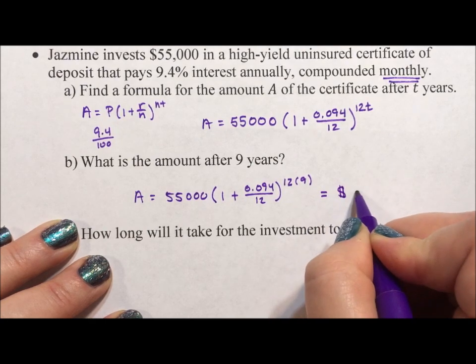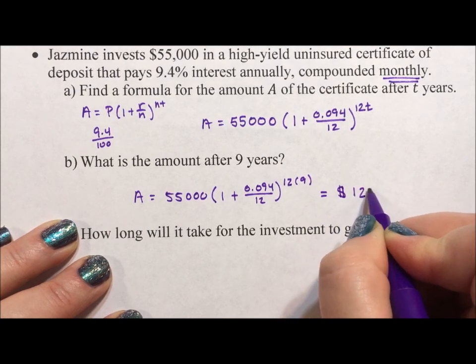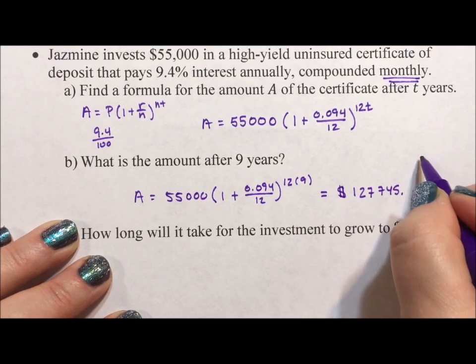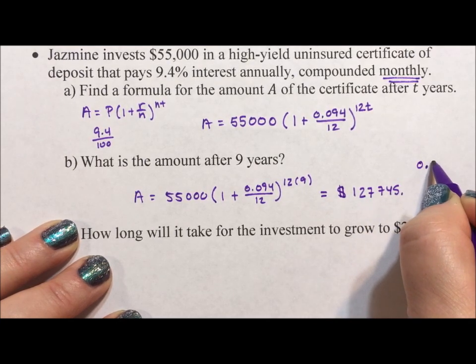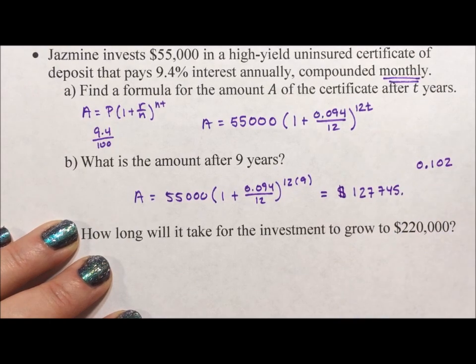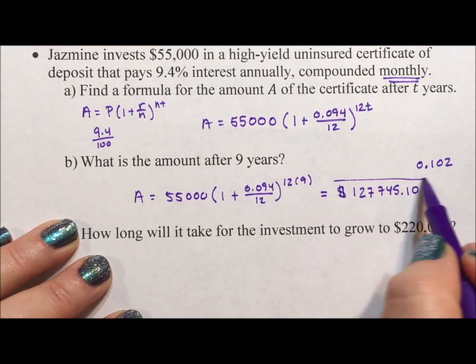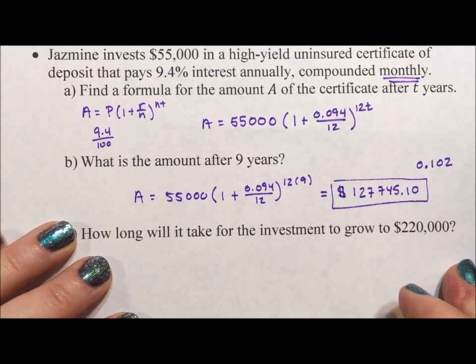So in my calculator, I get 127,745.102, but this is money. Money is always rounded to two decimal places. So I'm going to say 10 cents.